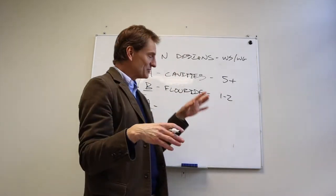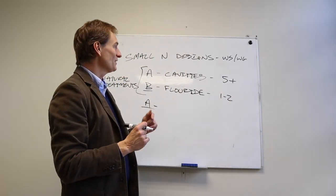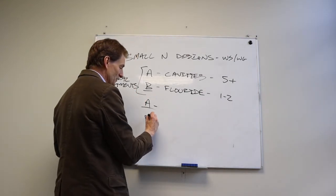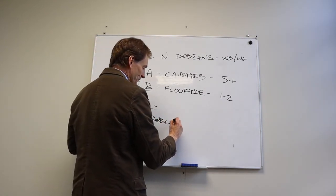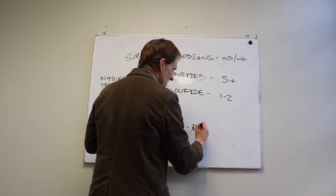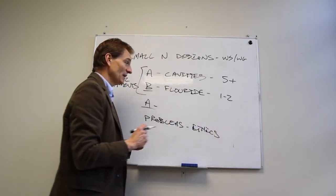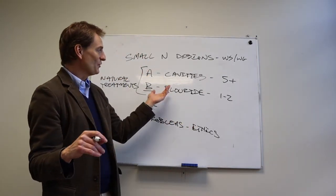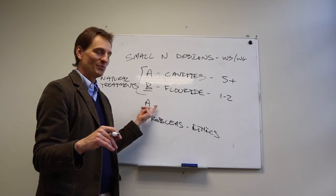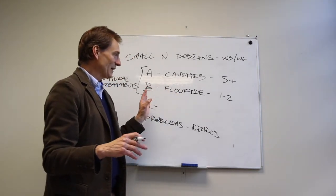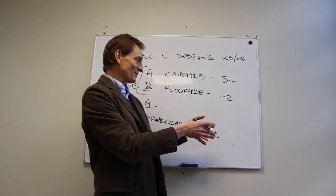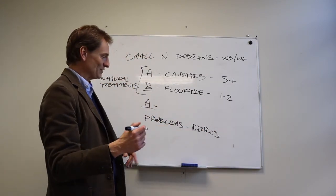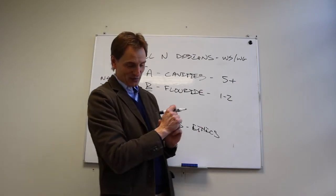And there's other examples of this, but I think you get the general idea. Let's talk about this though, because this is one of the problems, like I said, is there's ethics involved in small end designs that you don't run into in other within subjects designs. If you know that fluoride cures cavities, then why would you put people into a condition where, you know, let's keep a test group of kids who aren't exposed to fluoride to see if they get a bunch of cavities. You can never do that study. And so that's one of the problems.